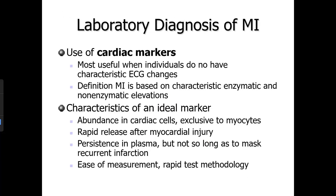Cardiac markers are the most important diagnostic tool in clinical chemistry when patients do not have characteristic ECG changes or a clear patient history. Characteristics of an ideal cardiac marker include: abundant in cardiac cells, exclusive to myocytes, rapid release after myocardial injury, persistence in plasma long enough to detect but not so long as to mask recurrent infarction, and easy, rapid measurement. The ideal marker does not currently exist.